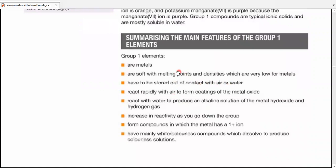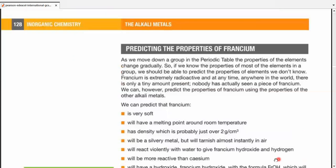Group 1 compounds are typical ionic solids and are mostly soluble in water. So, summarizing the main features, Group 1 elements are metals, are soft, can be cut with a knife, with low melting points and densities, which are low for these metals if compared with the rest of the metals of the periodic table. They have to be stored out of contact with air or water because they're going to react with both. They react rapidly with air to form coatings of metal oxide. They react with water to produce an alkaline solution of the metal hydroxide and hydrogen gas. This reaction is vigorous in cases of elements present down the group. There's an increase in reactivity as you go down the group. They all form compounds in which metal has +1 ions, specifically ionic bond compounds, and have mainly white or colorless compounds which dissolve to produce colorless solutions, which means they're mostly soluble in water. At least their salts are.